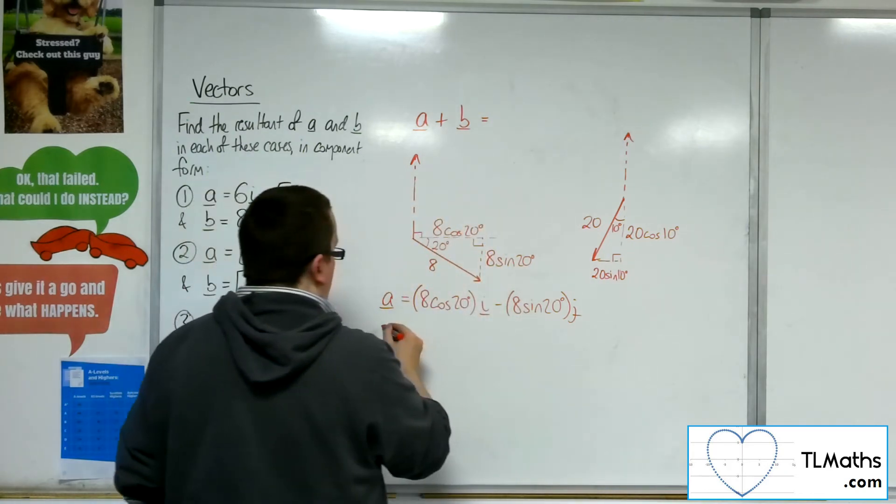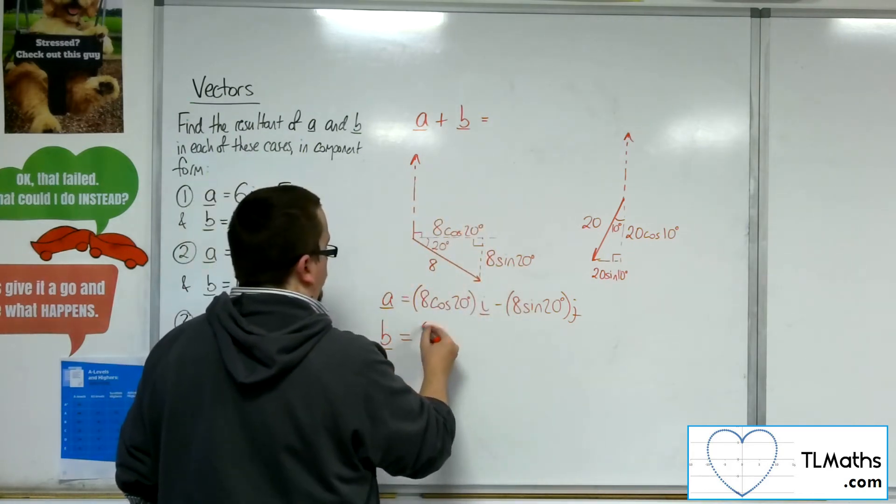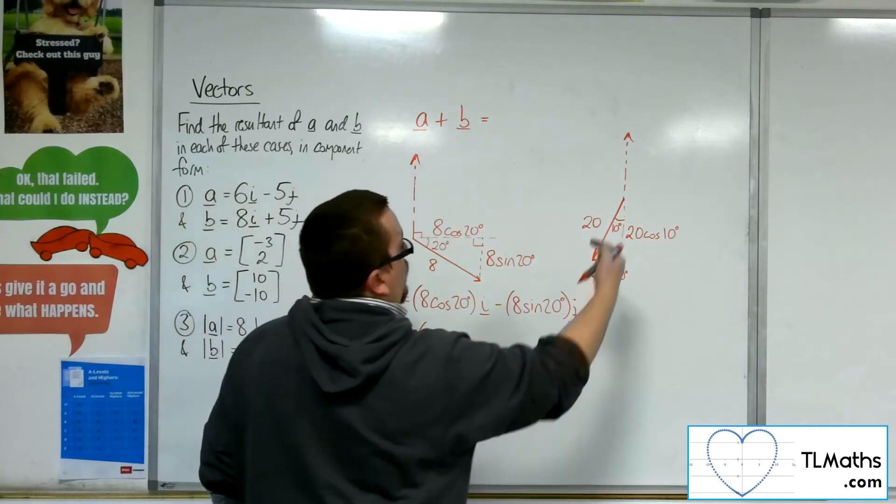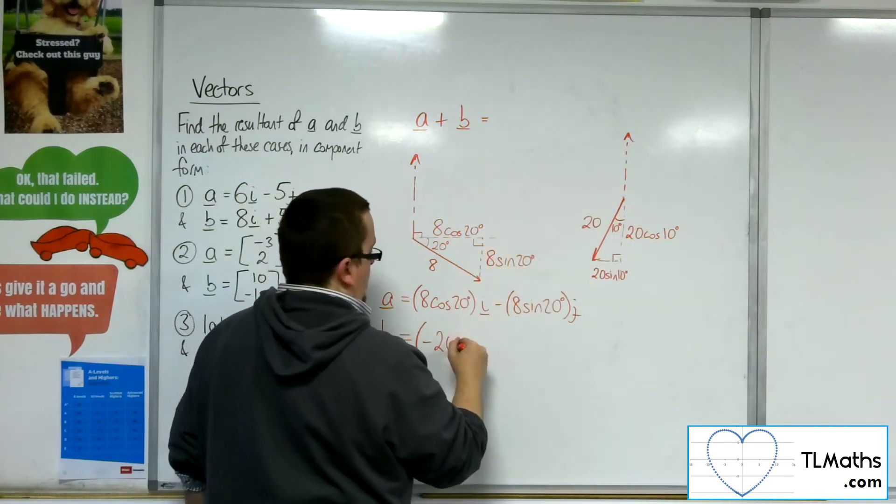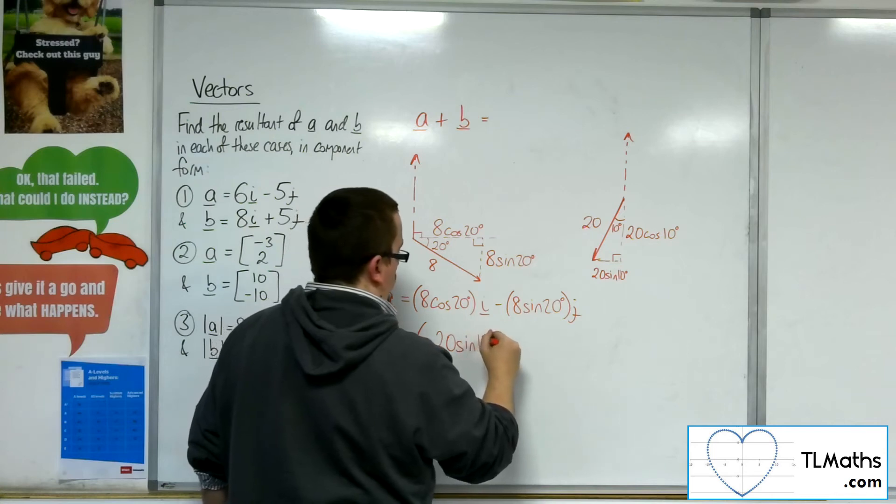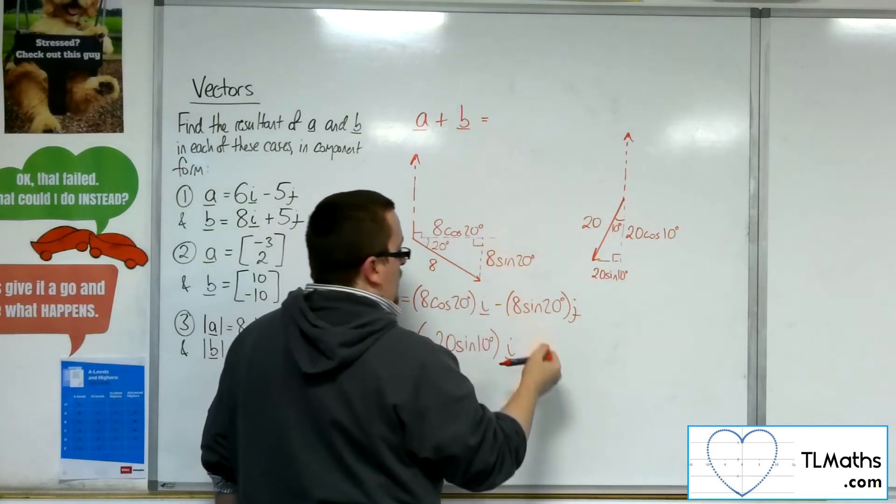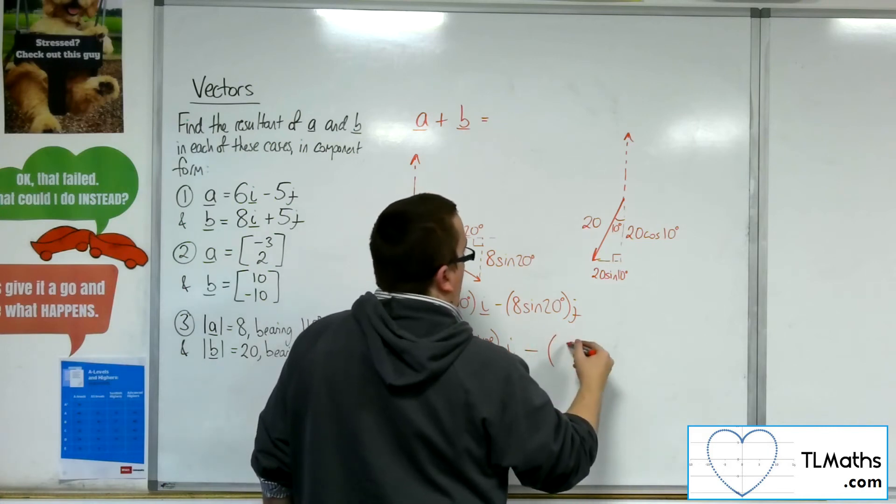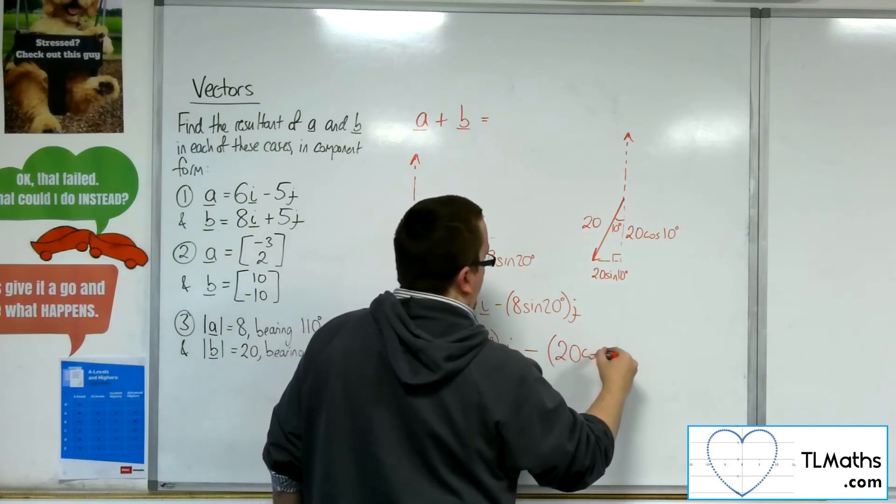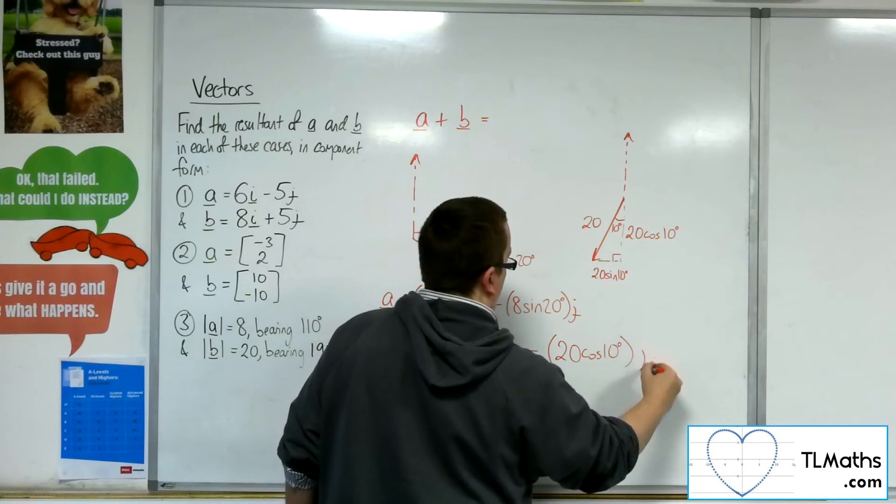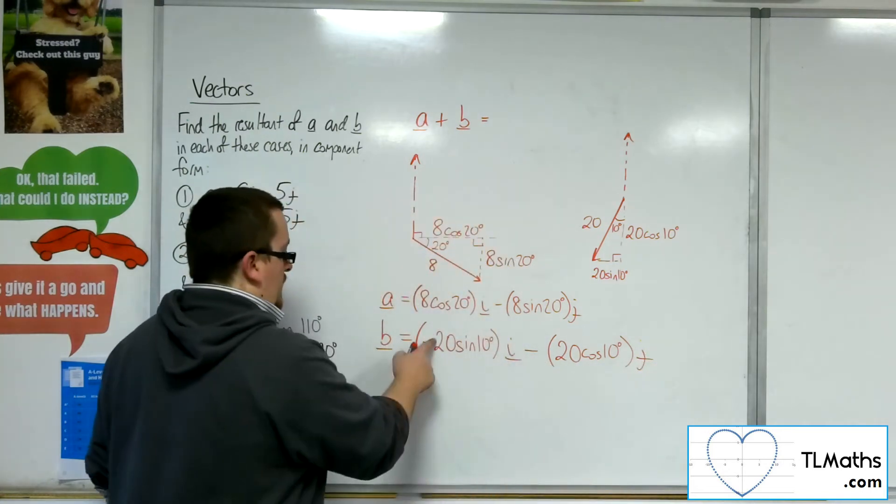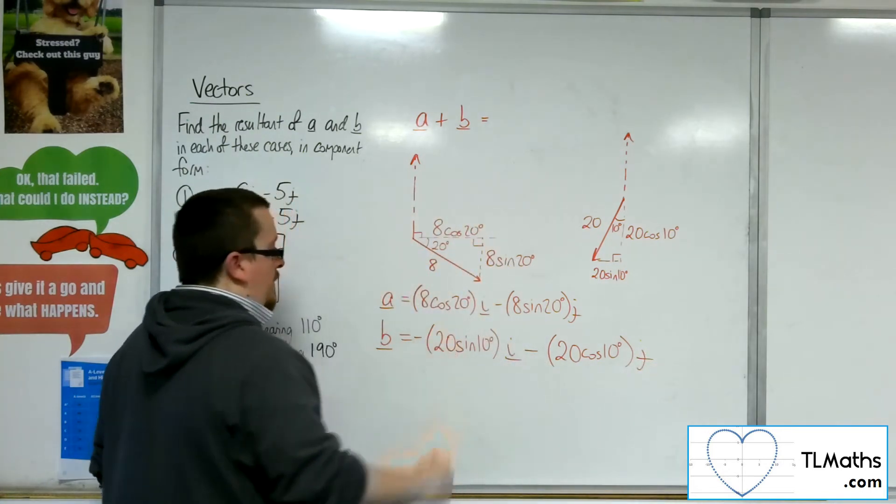So the vector for b is equal to minus 20 sine 10 degrees i, because we're going left, and then down 20 cosine 10 degrees. So I'll put the minus sign on the outside.